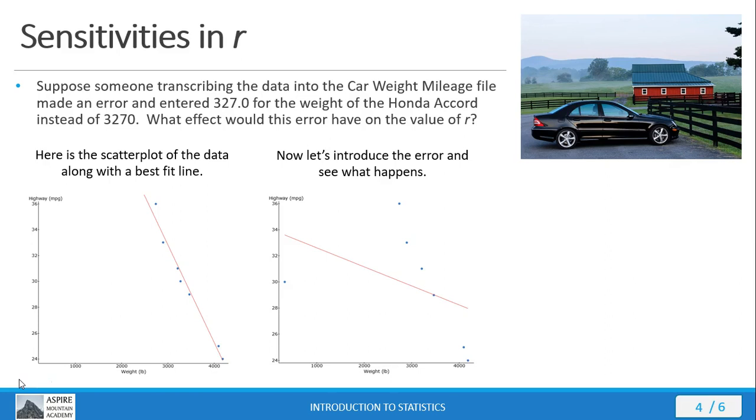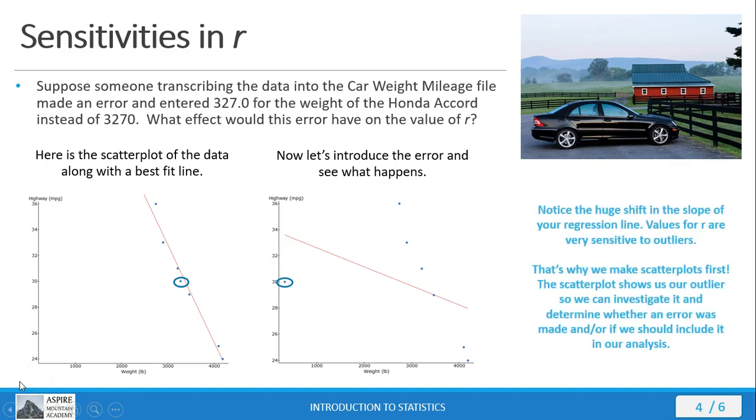Look at the wild swing that one erroneous data point made in your line of best fit. Why is that? Well, look at the data point that shifted position. You've got this point right here. It shifts all the way over here to the left and so the effect on the line of best fit is that it gets pulled down by this erroneous data point that is now an outlier since it's far removed from the other data points. So the moral of the story is the linear correlation coefficient is very sensitive to outliers.